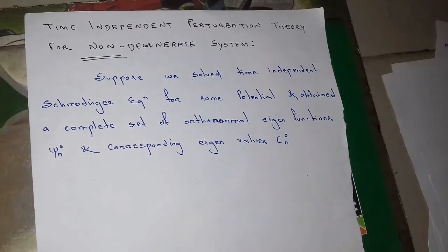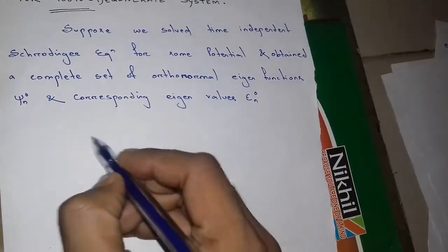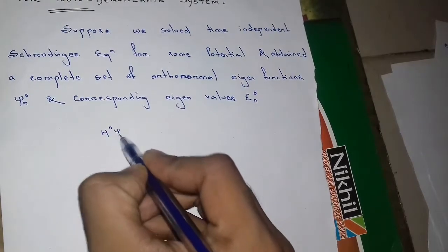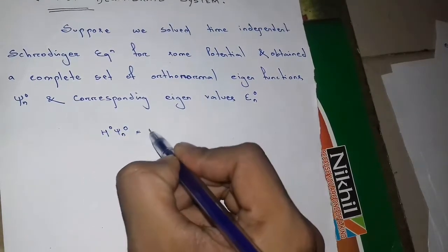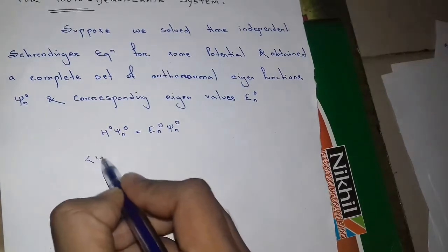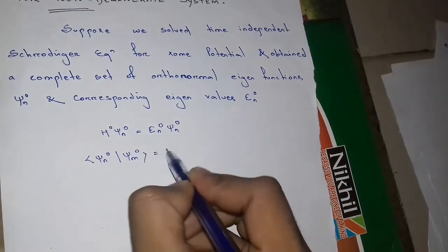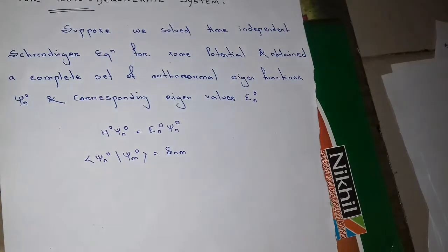Suppose we solved time independent Schrodinger equation for some potential and obtained a complete set of orthonormal eigenfunction psi n0 and corresponding eigenvalues en0. Then we have H0 psi n0 equals to en0 psi n0 and psi n0 psi m0 equals to delta mn.